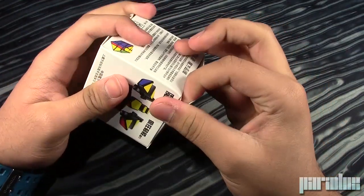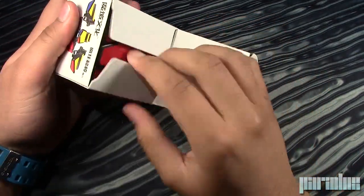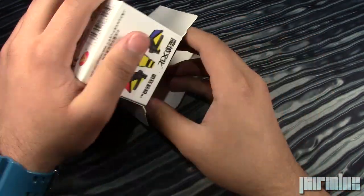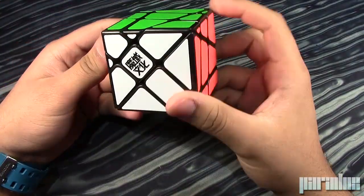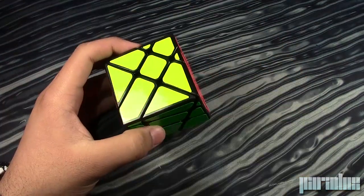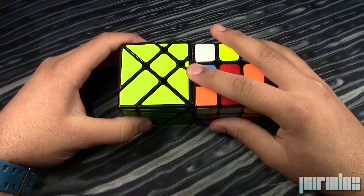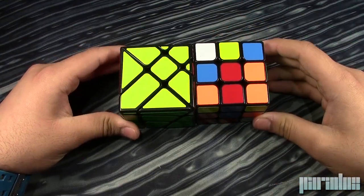I've heard that the design is made out of a YJ Yilang, and I really like the Yilang, so I'm excited to see how this turns out. I think it's going to have a really crispy feel. It looks like a Yilang. It's pretty nice, it's a little bit bigger than a Yilang, actually.